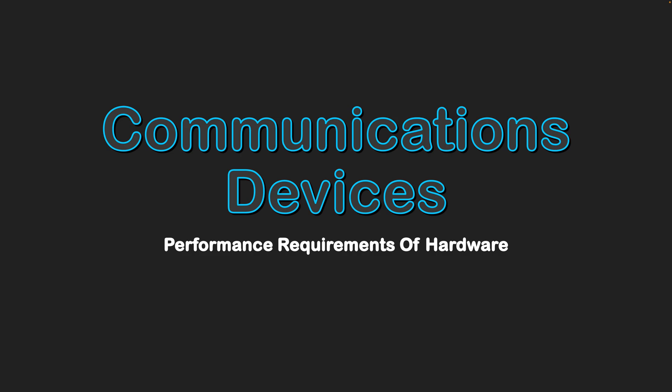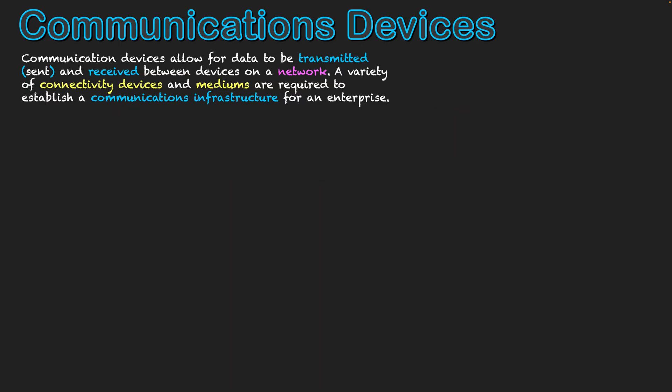Communication devices allow for data to be transmitted, sent, and received between devices on a network. A variety of connectivity devices and mediums are required to establish a communications infrastructure for an enterprise. We have multiple devices all connected to one another through different mediums, sending data within that network and connecting to the internet, so clients can connect to us through the internet.